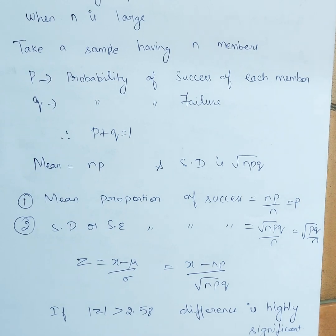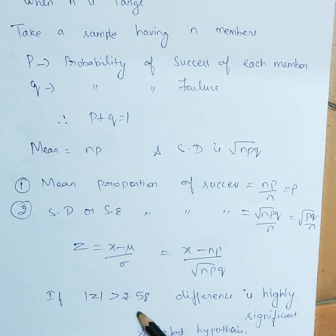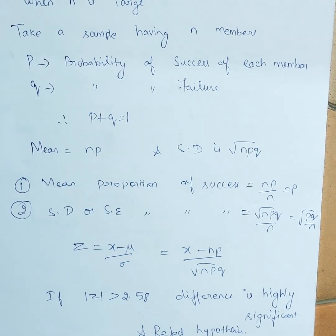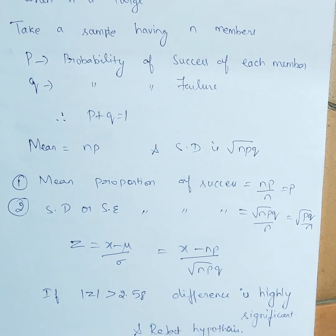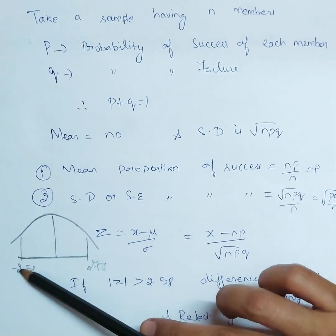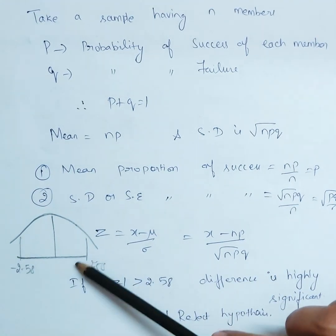If z is greater than 2.58, the difference is highly significant. If you remember, the range minus 2.58 to 2.58 covers 99 percent of the area. If the calculated z falls within this range we accept the hypothesis; if it is above 2.58 the difference is highly significant and we reject the hypothesis. I have drawn the diagram showing this region.